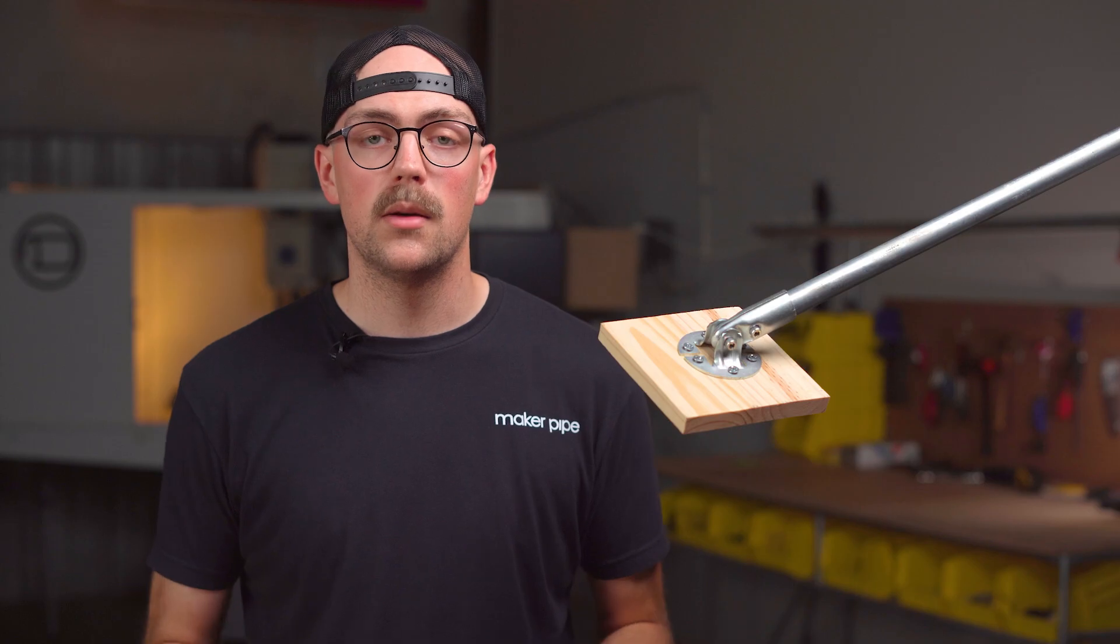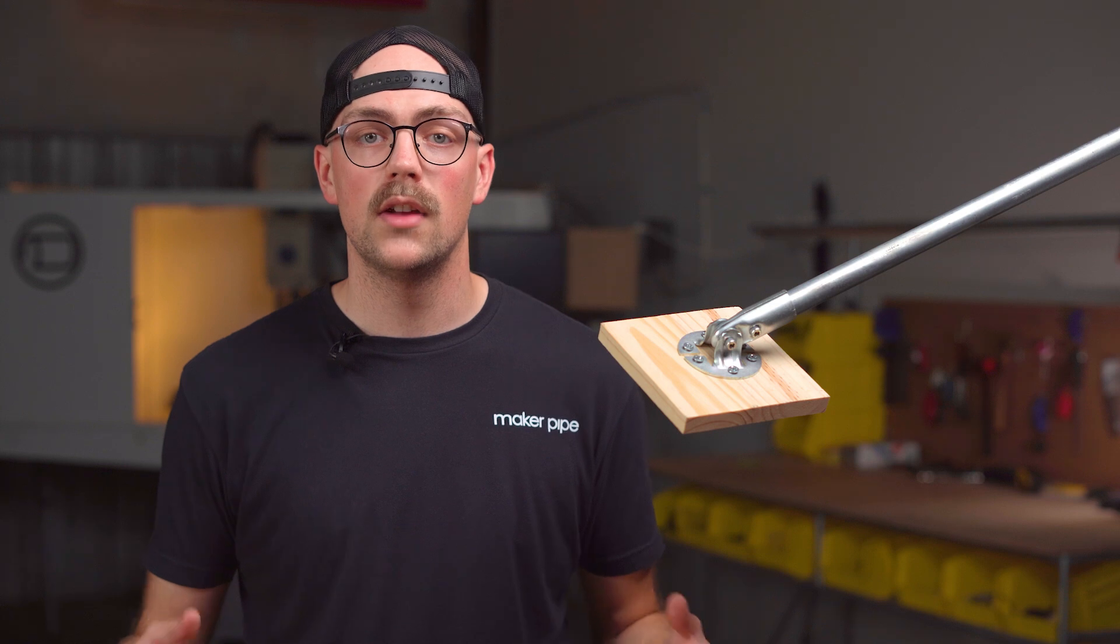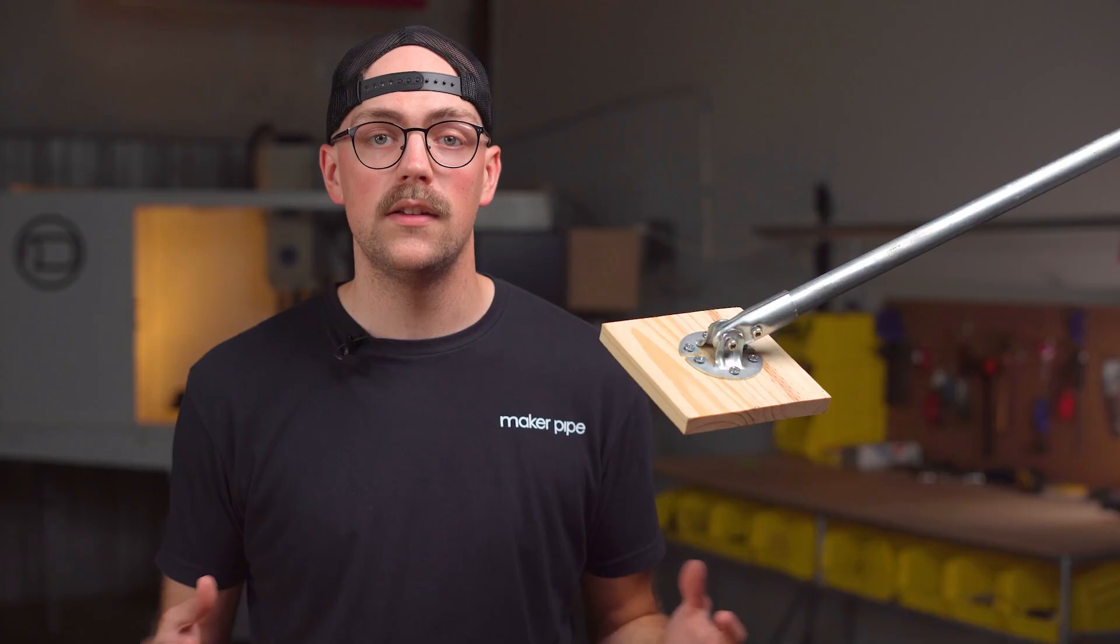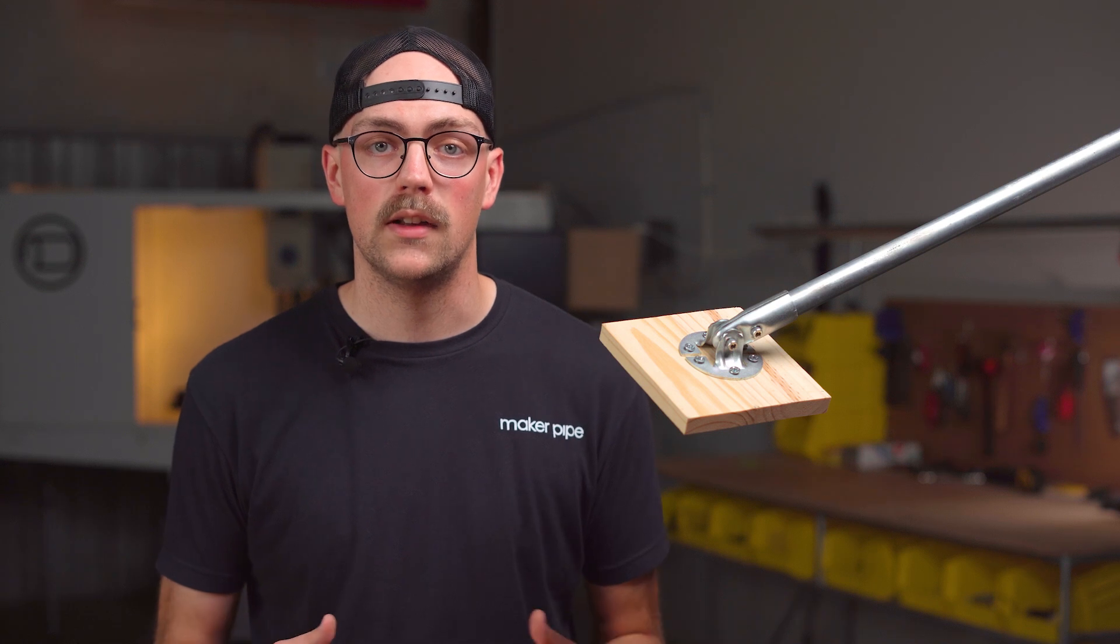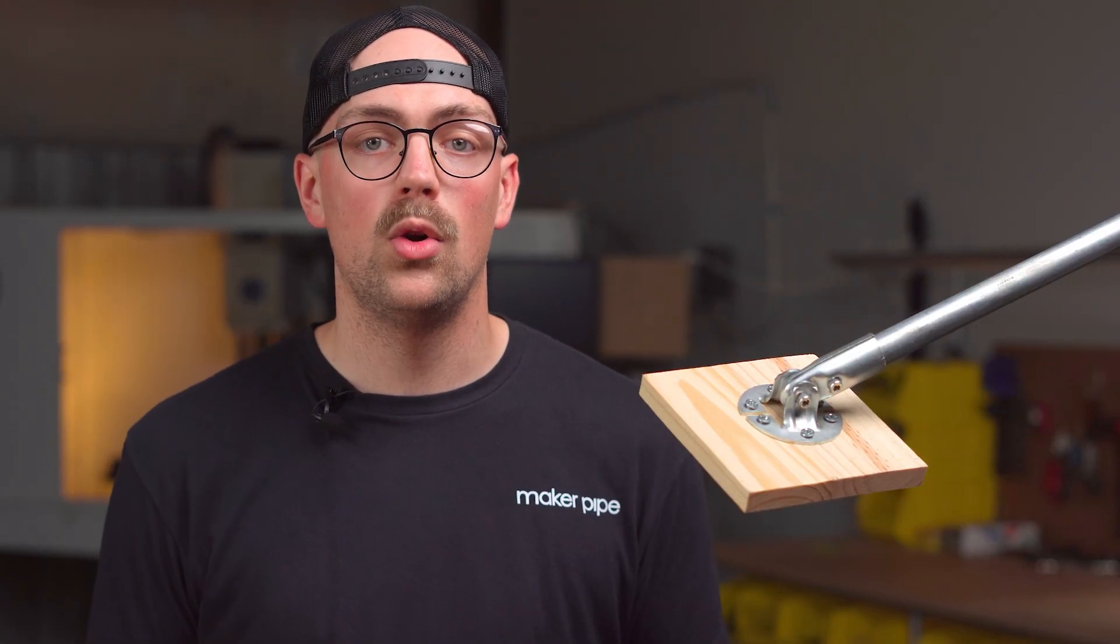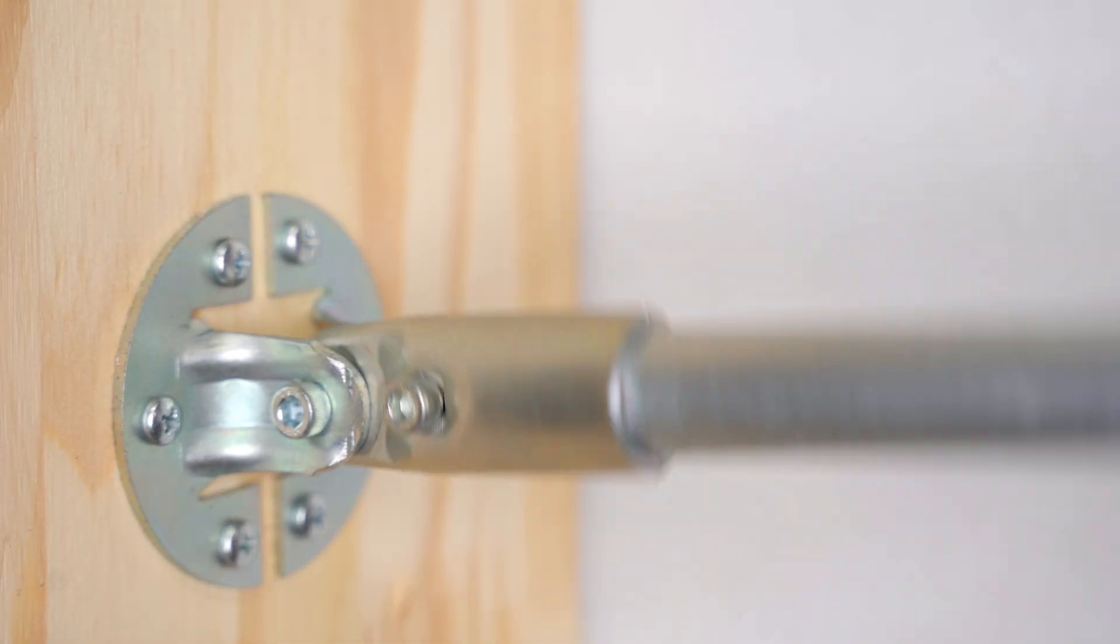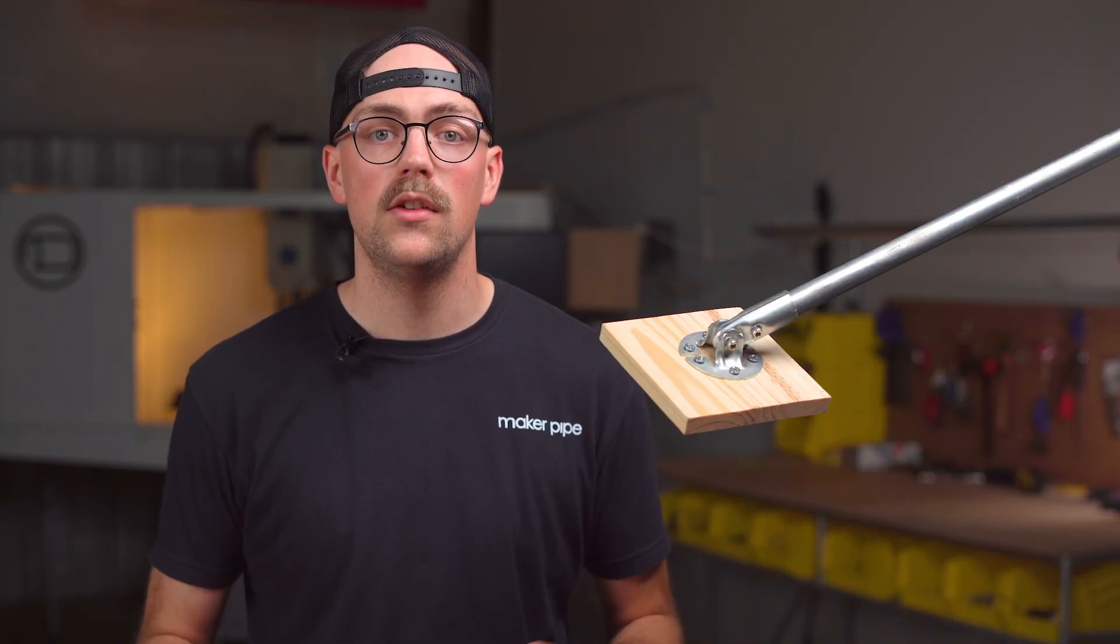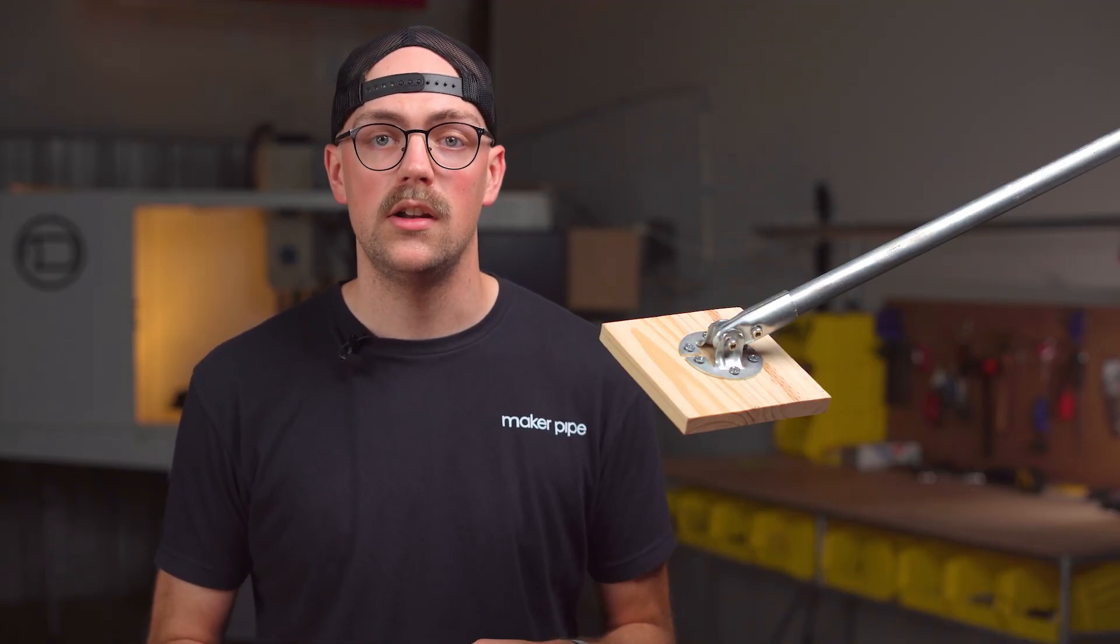Each connector in the Maker Pipe system serves its own purpose and solves a unique problem within builds. The adjustable angle flange allows you to secure an angled piece of EMT conduit to a flat surface. You can fully tighten the connection to hold a desired angle or you can leave it loose to create a hinge. Let's look at a few community builds to see some common ways you can use the adjustable angle flange in your builds.